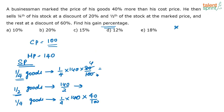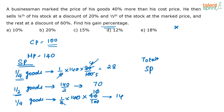Converting 80% to the fraction 4/5 makes calculations easier. One-fourth of goods is sold for 140 by 5, which is 28 rupees. Half the goods are sold for 140 by 2, which is 70 rupees. One-fourth at 40% gives 14 rupees. So total selling price is 28 plus 70 plus 14, which equals 112.